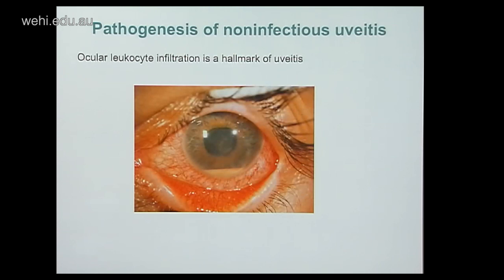Ocular leukocyte infiltrate is a hallmark of uveitis. This image shows anterior uveitis affecting both the iris and anterior chamber — you can see the anterior chamber filling up with leukocytes. A major population within the leukocyte infiltrate is neutrophils.